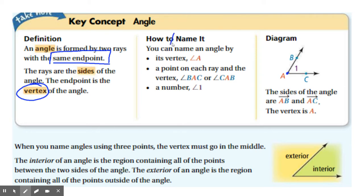Now, there are many ways to name an angle. So I'm going to focus on this one right here for right now. You can name an angle with three points. So in this case, B, A, C, or angle C, A, B.